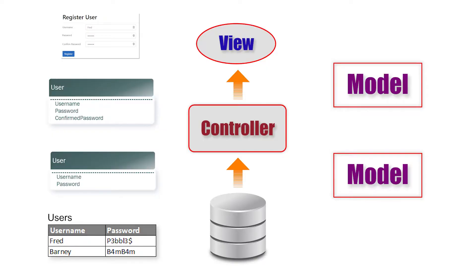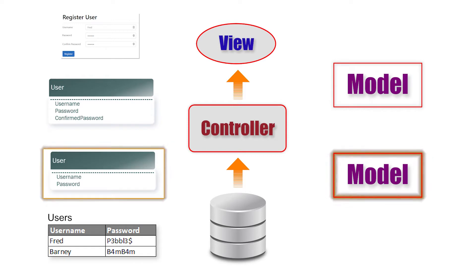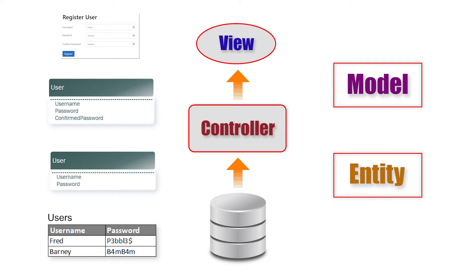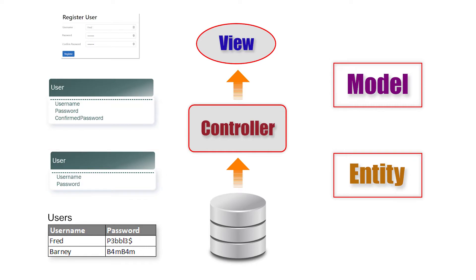So we can immediately see a situation where there is a difference between those two structures, and it will happen again and again. The terminology I personally use is this: the model that takes data from the database to the controller we call the entity model, or more normally just the entity. The classes that take data from the controller to the view I simply call model classes, because they are the M of MVC. Some people call the MVC model the view model, but that term is also used in MVVM — model-view-view-model — where it means something slightly different. So we'll stick with 'model' for MVC and 'entity' for Entity Framework.